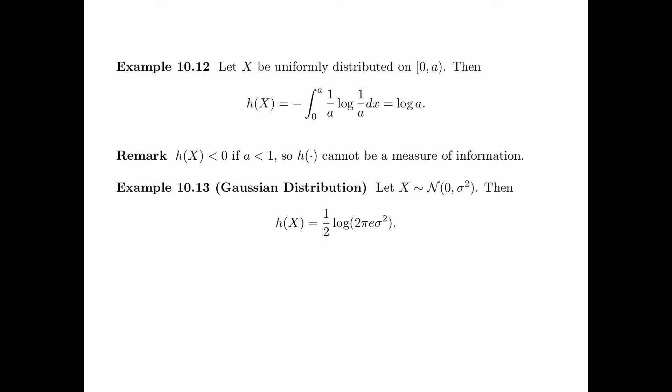In the next example, we evaluate the differential entropy of a Gaussian distribution. Let x be the Gaussian distribution with mean 0 and variance σ². Then the differential entropy of x is equal to ½ log(2πeσ²).